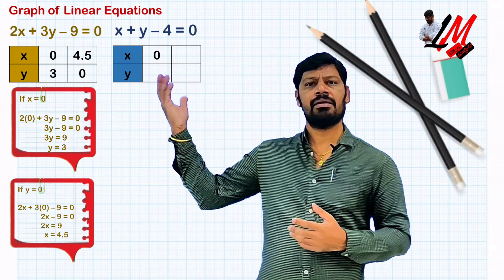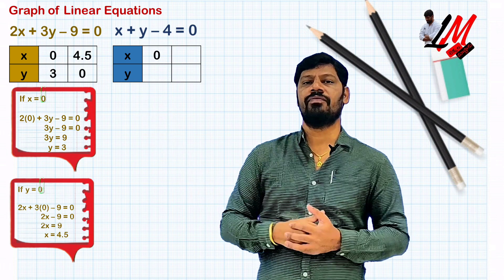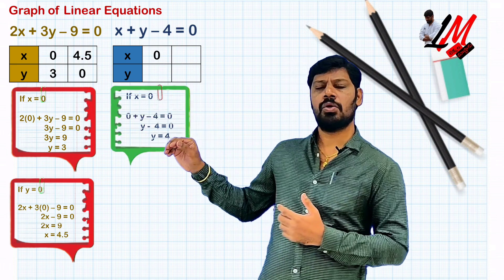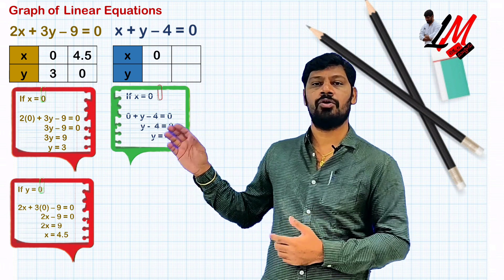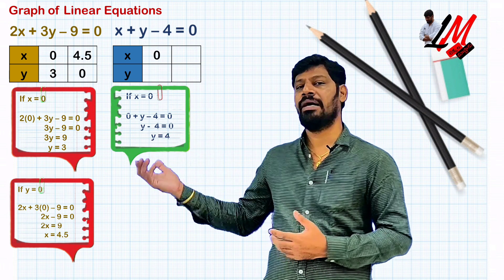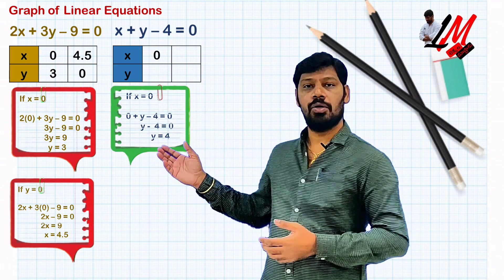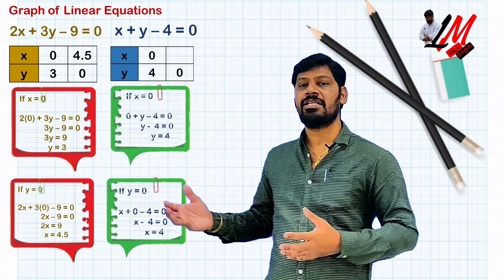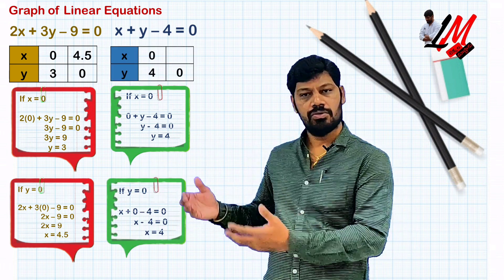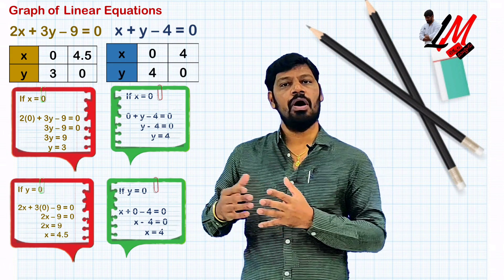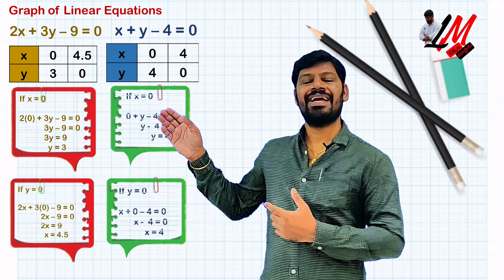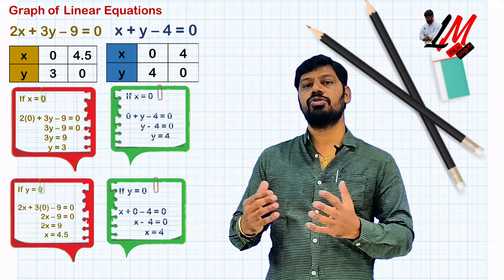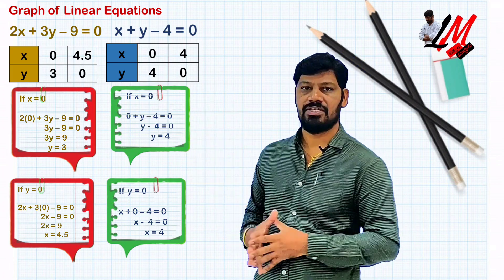The second equation x + y − 4 = 0 is simpler. When x = 0, y = 4, giving point (0, 4). When y = 0, x = 4, giving point (4, 0). So the two points for the second equation are (0, 4) and (4, 0).